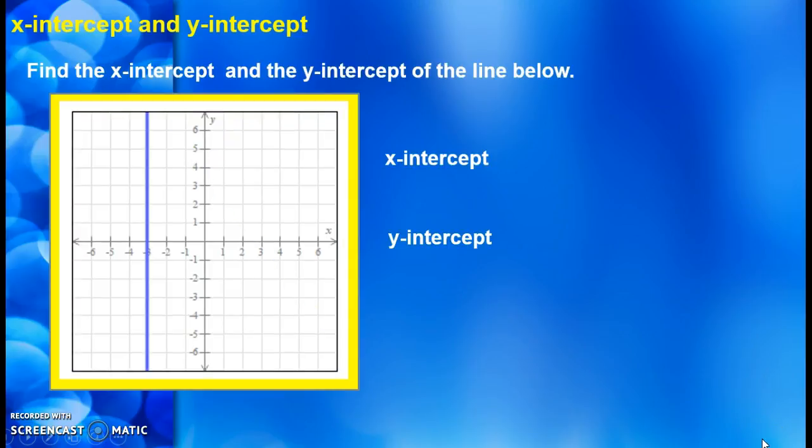And a final example. Well, the x-intercept is easy. It's minus three. What about the y-intercept? This vertical line does not cross the y-axis, so there is no y-intercept.